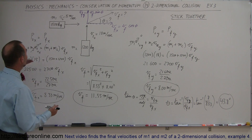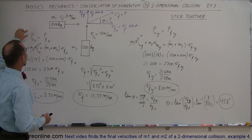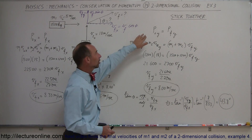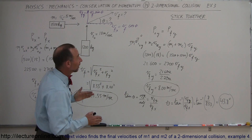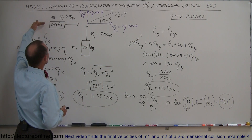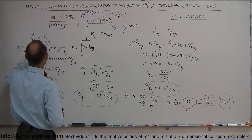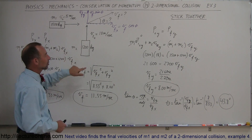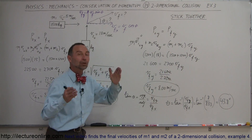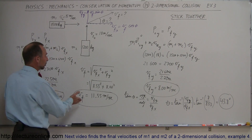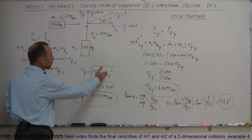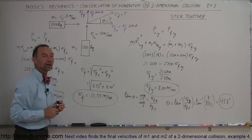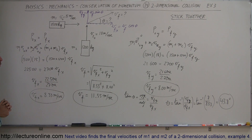To summarize: use conservation of momentum in the x direction and in the y direction. In this case, one object has no y component and the other has no x component, which is why those terms go to zero. Find v_final_x and v_final_y, then combine them using the Pythagorean theorem to get the final speed, and use the arctangent to find the angle with respect to horizontal. And that's how we do that.